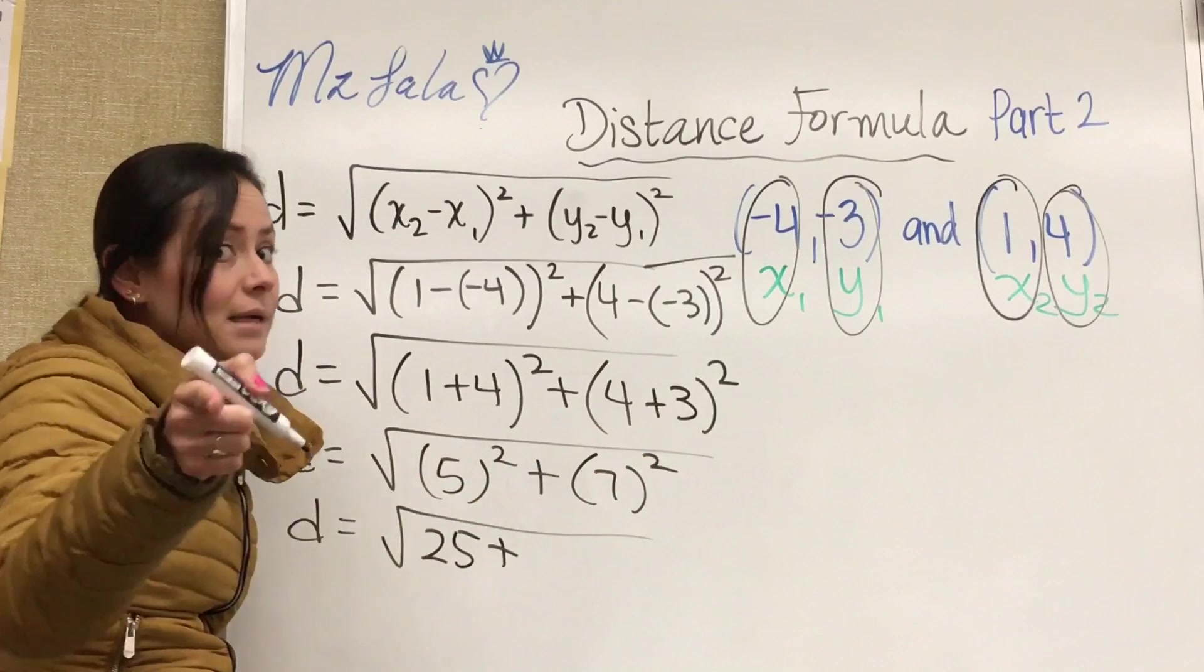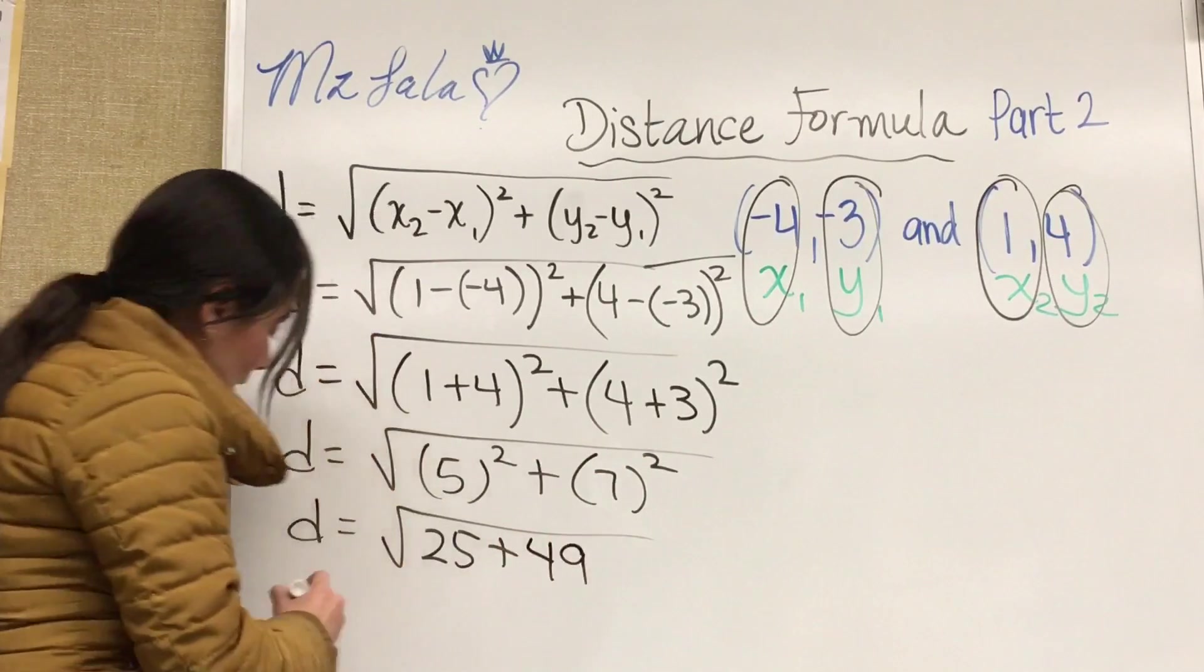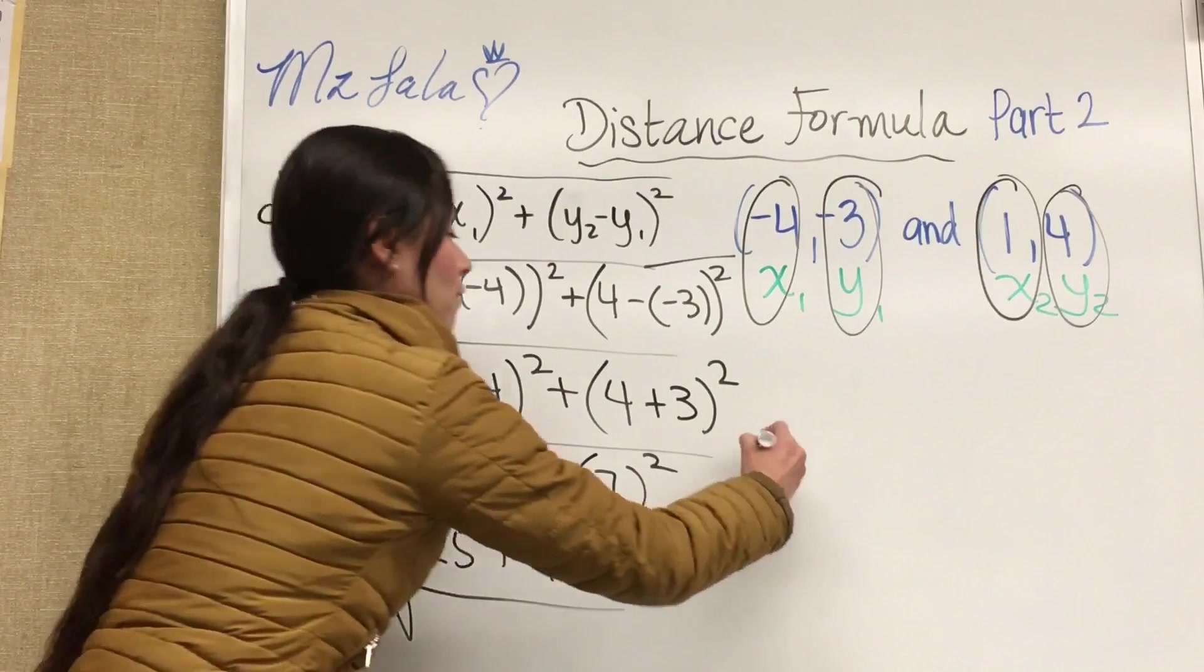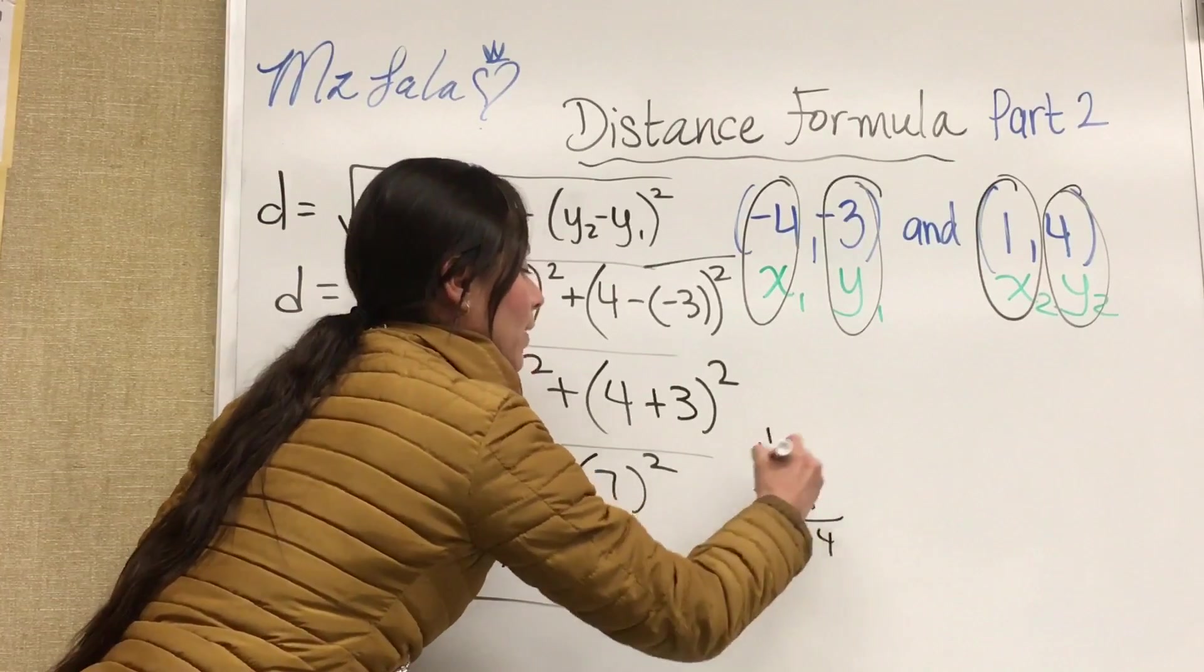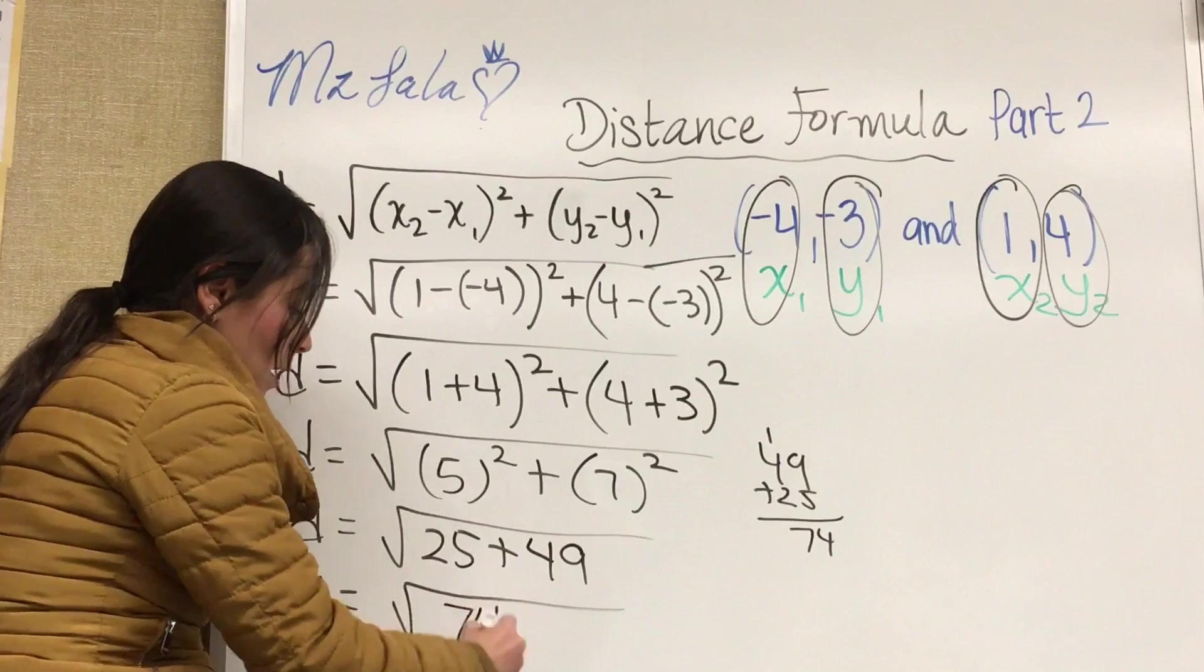7 squared is not 7 times 2, it's 7 times 7, 49. And now if we add these we're gonna have 49 plus 25. We have 14, carry the 1, 4, 5, 6, 7. That's the square root of 74.